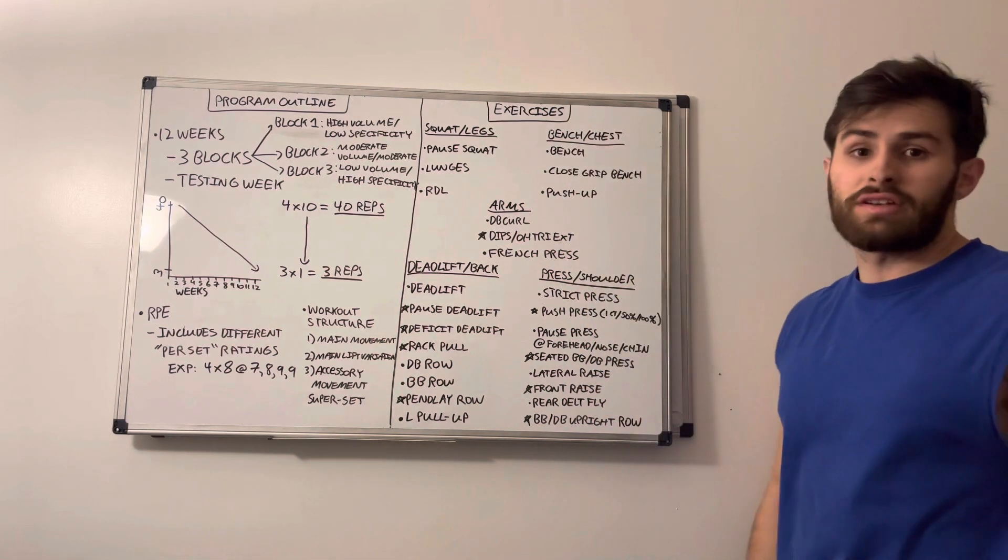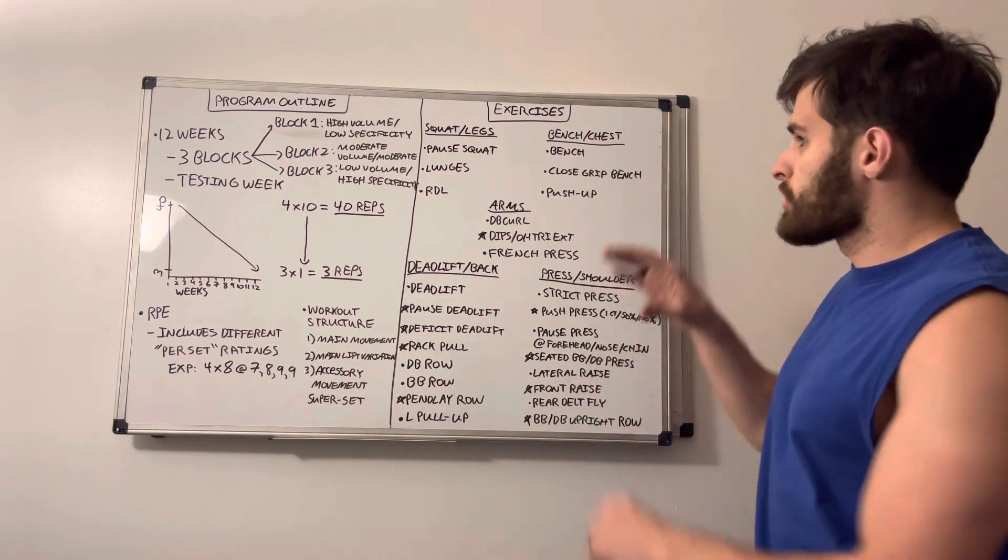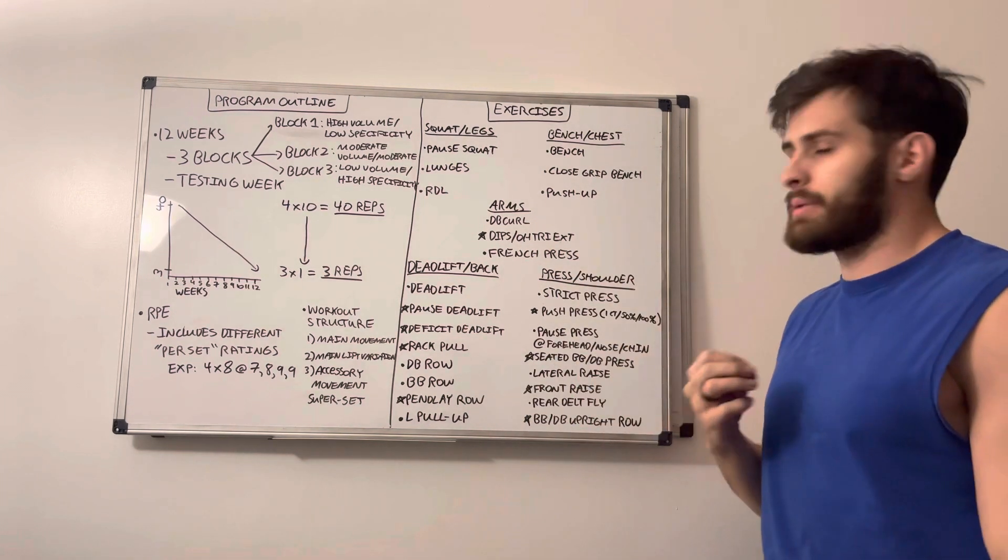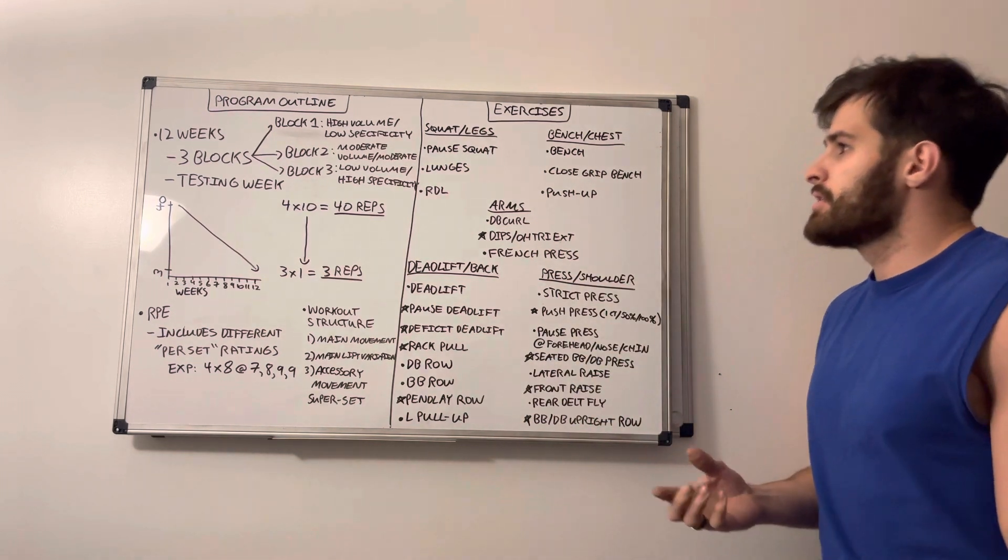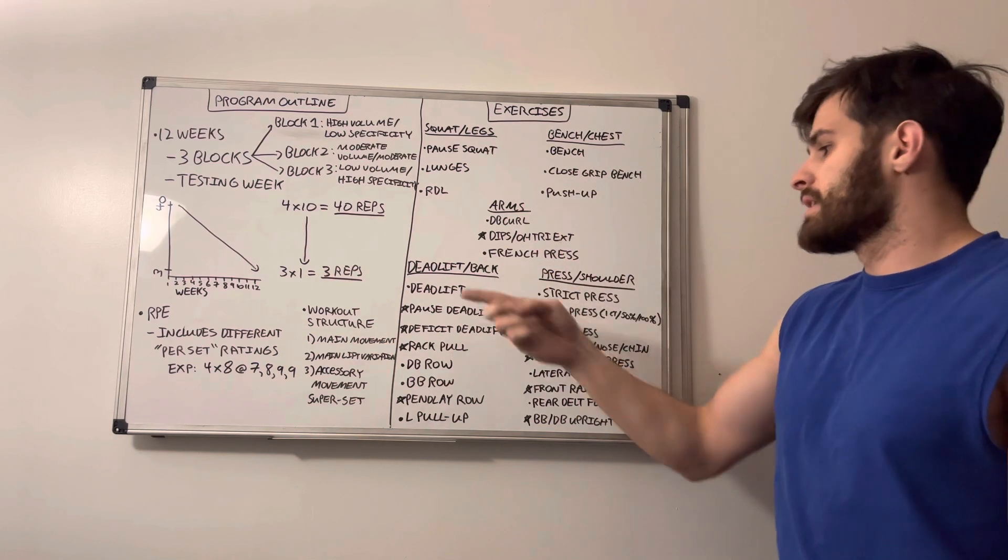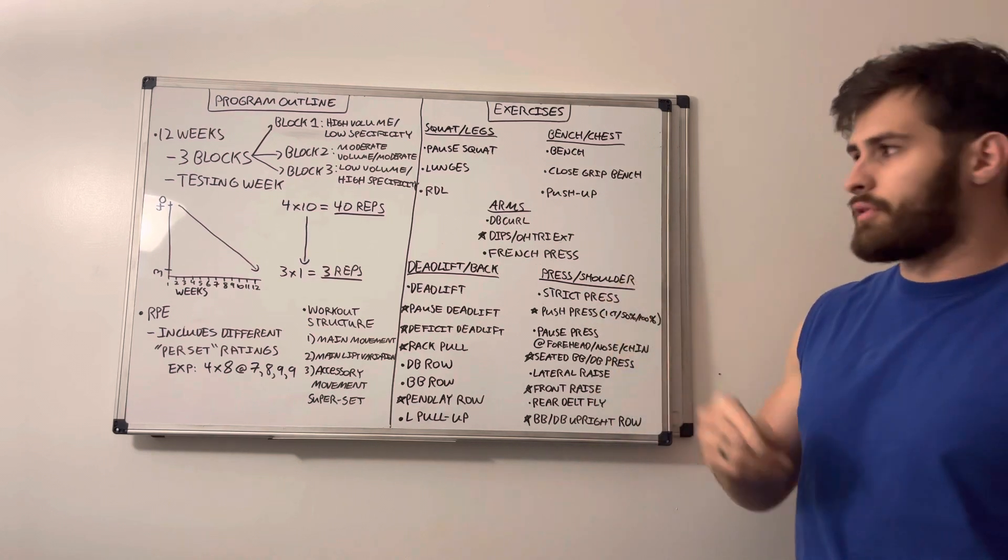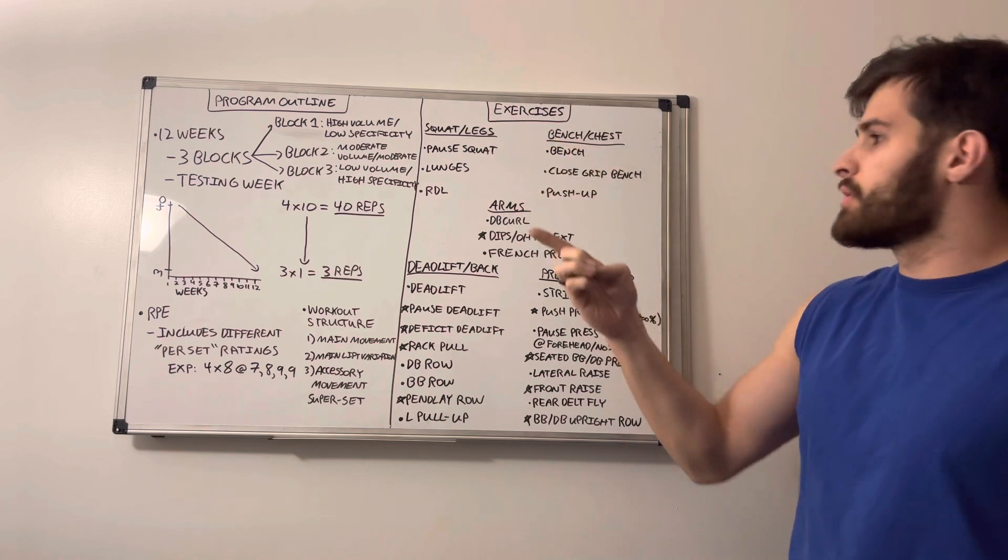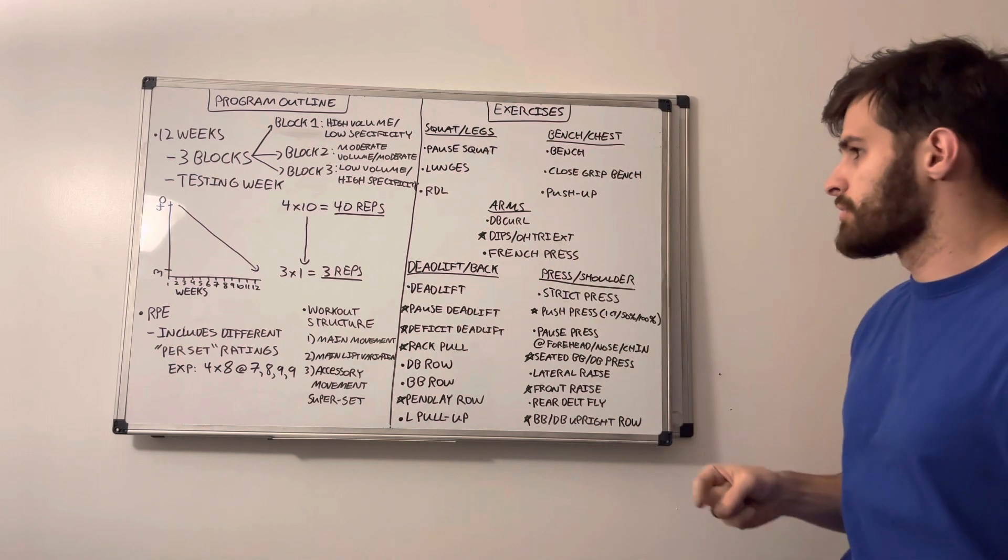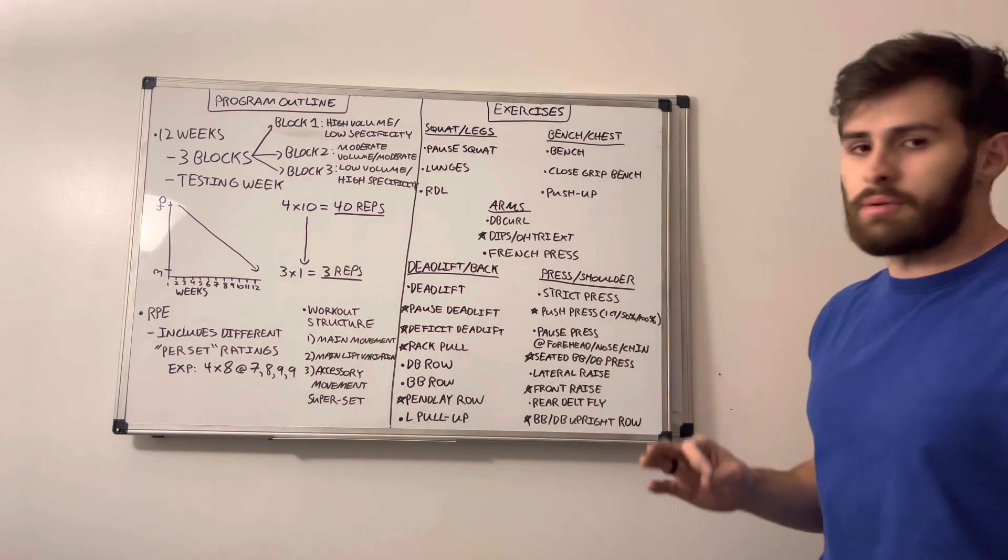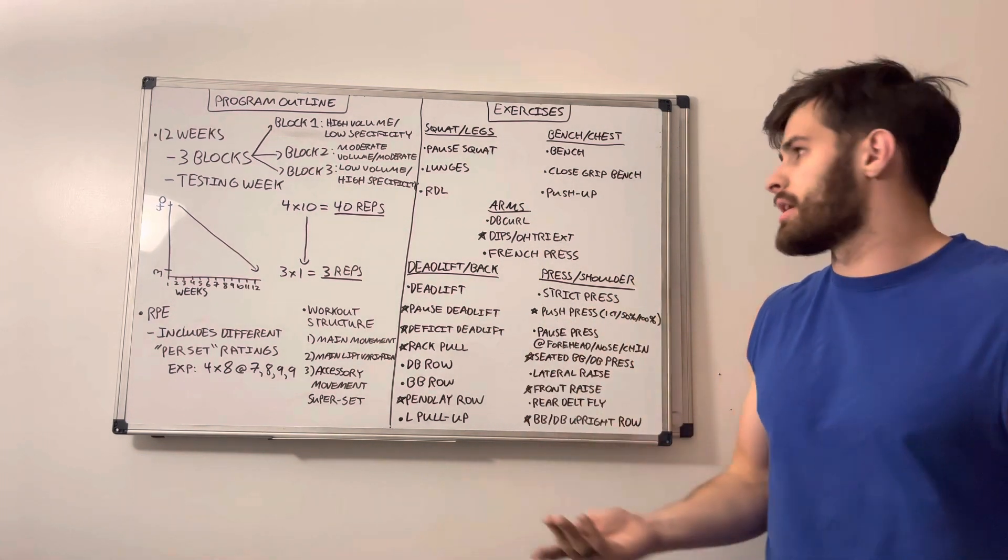Next is the exercises we'll be putting in it. I broke this up into either movements or body part types, depending on how you want to conceptualize it. So we have squat or legs, bench or chest focused, deadlift or back focused, and press or shoulder focused. As far as the squat and leg focus, we have pause squats, which I mentioned before, lunges, and RDLs. So pretty familiar stuff if you come here at Steel pretty often.